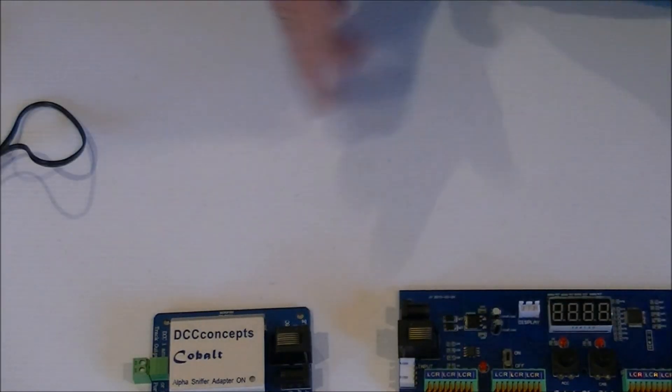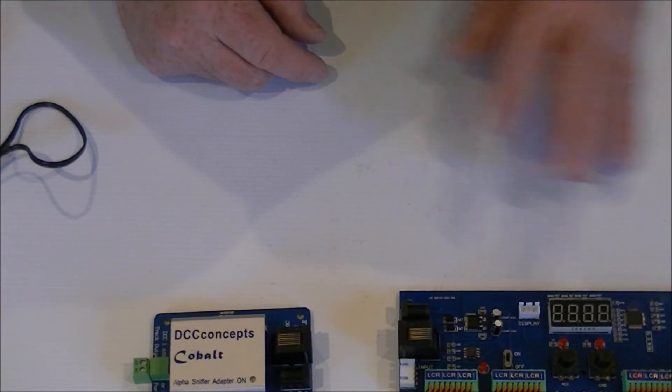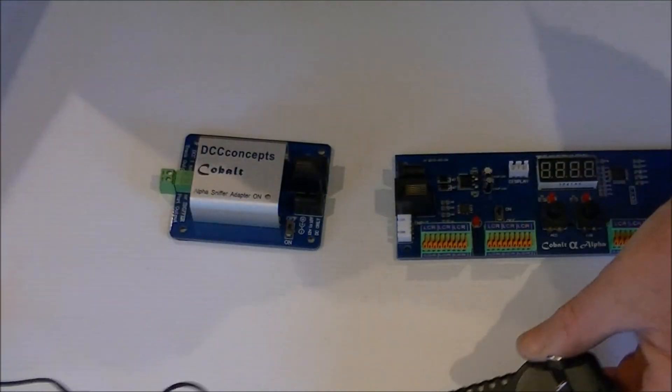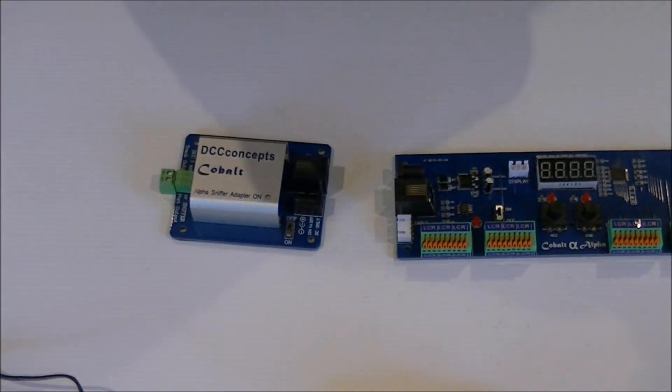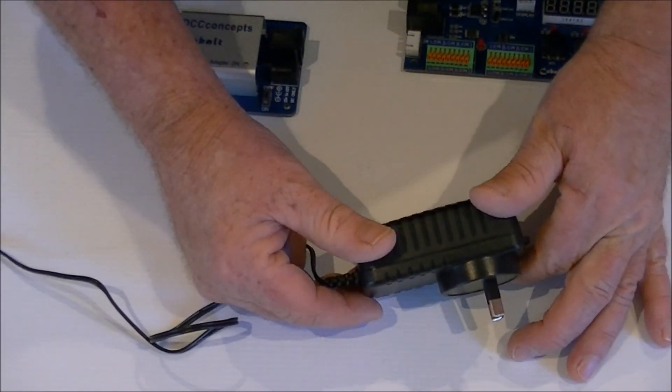You need power somewhere in the system. You need to be able to power the sniffer or the cobalt alpha and the switch power. Well, I have a bit of trouble focusing there. So we went and brought from the local hobby shop a 12 volt 1.5 amp regulated power supply.